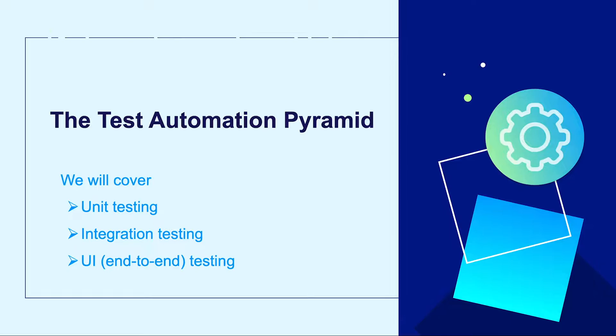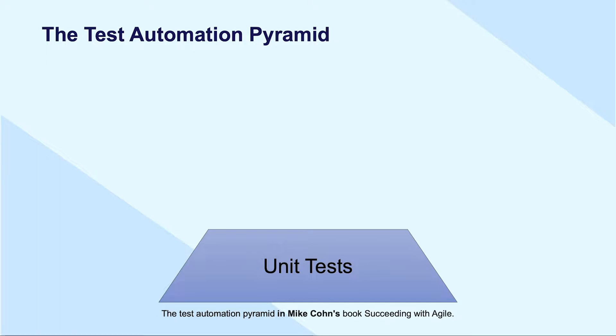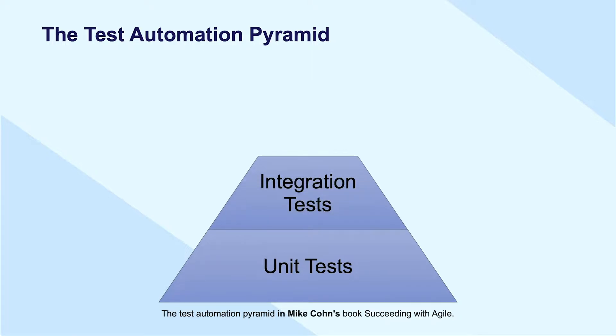All will be discussed later in this chapter. Generally, unit testing comes in the first stage where modules, features, and functions are separately tested. Integration testing takes place in the next stage to test the interaction between those functions or systems, which is why they are often called system integration testing.